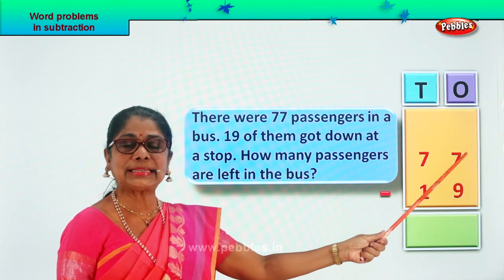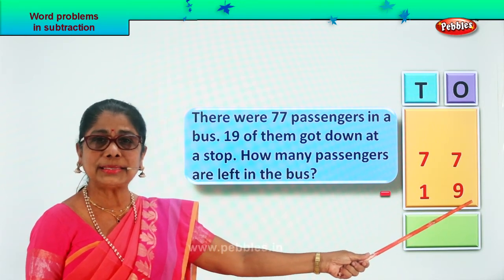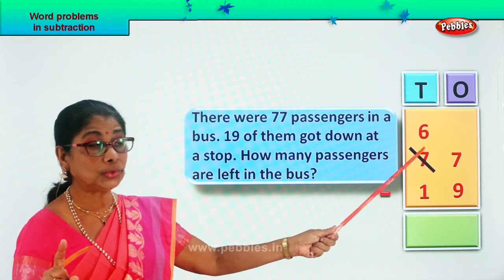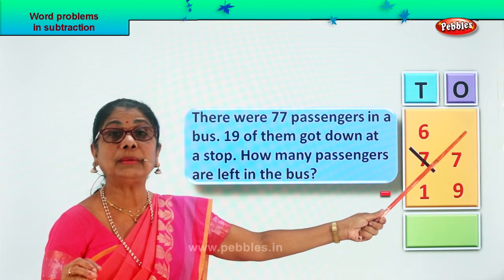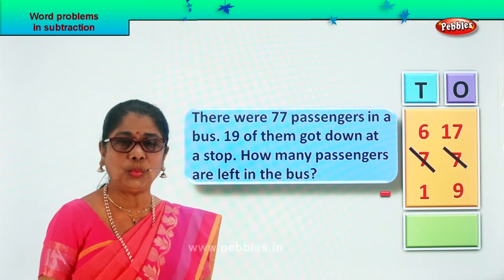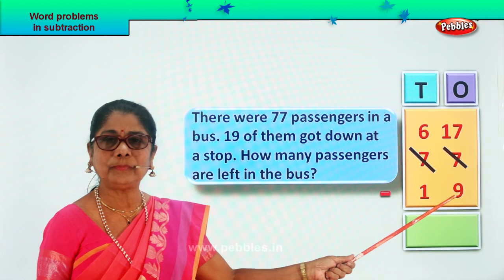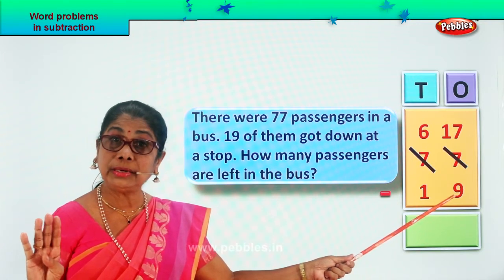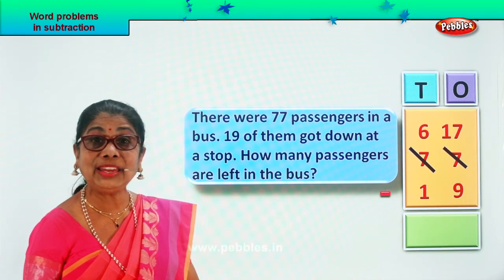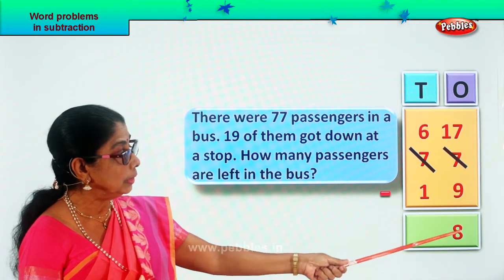7 ones minus 9 ones — 7 is a smaller number, smaller than 9. So we cannot minus; we are going into borrowing. From 7 tens, we borrow 1 ten. 7 minus 1 is 6. That 1 ten goes to the ones place, it becomes 10 ones plus 7 ones — that is 17 ones. 17 ones minus 9 ones: after 9, count 10, 11, 12, 13, 14, 15, 16, 17 — that is 8 ones. 17 minus 9 is 8 ones. So we write down 8 ones.